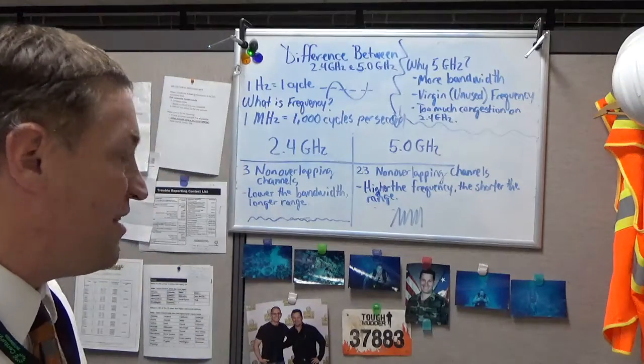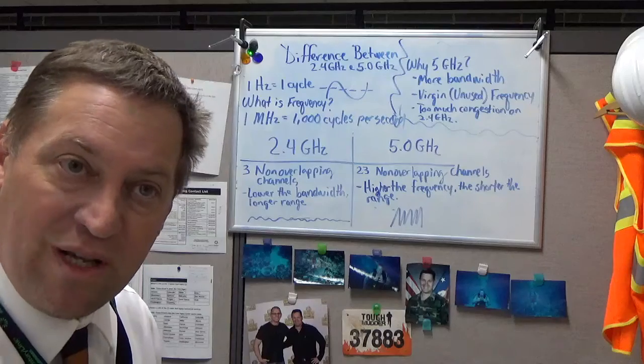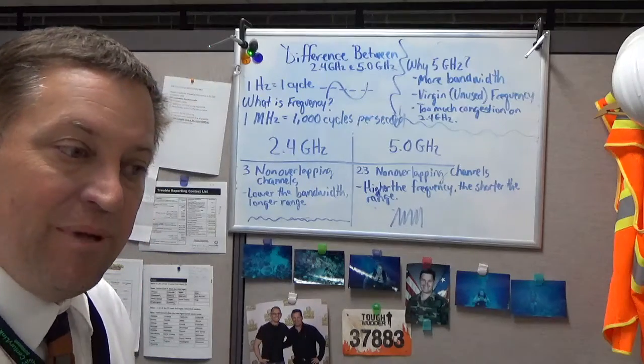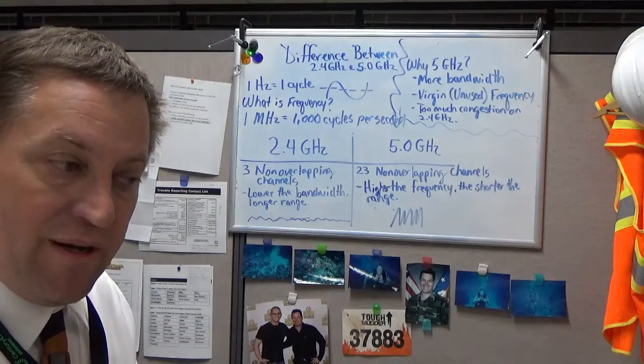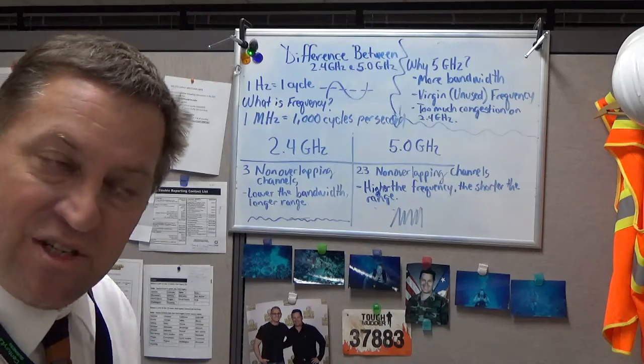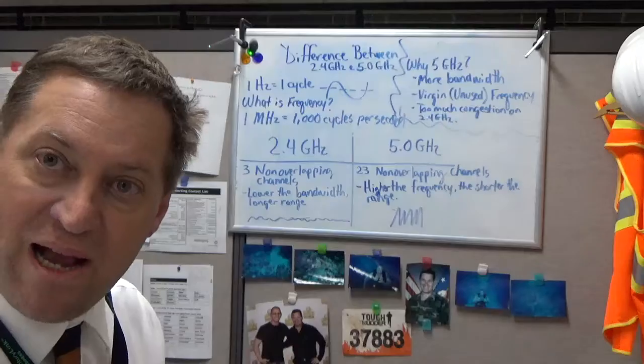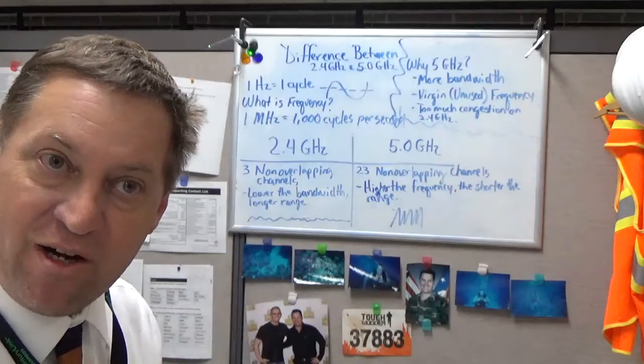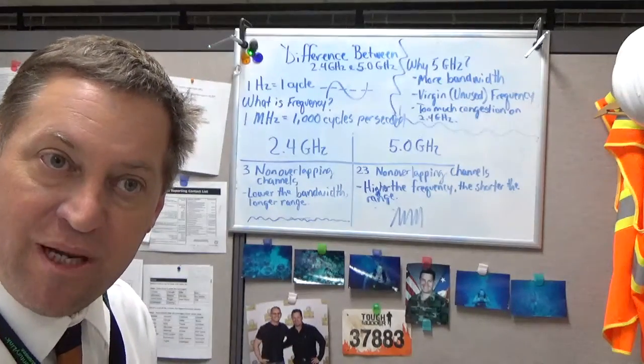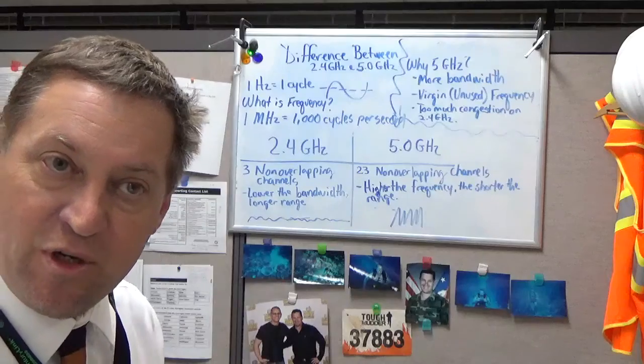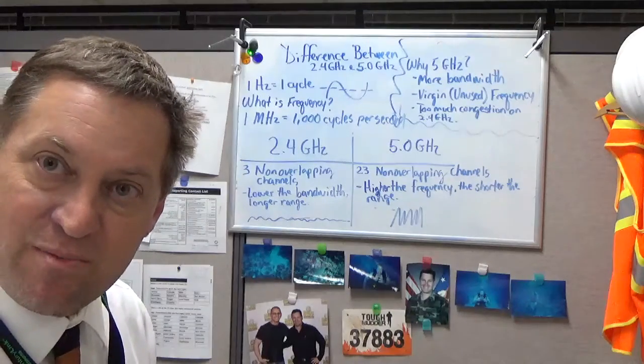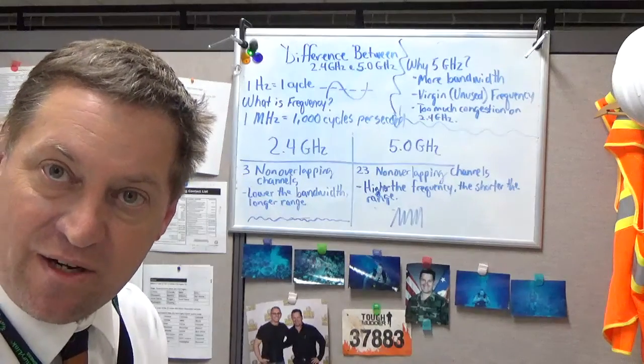Now 5 gigahertz has 23 non-overlapping channels. These are important because you can set your access point for a certain channel where there's going to be less interference. There's less traffic on that particular channel of that frequency. And you're going to be able to have much cleaner communication between the access points and the clients that are connecting to it.